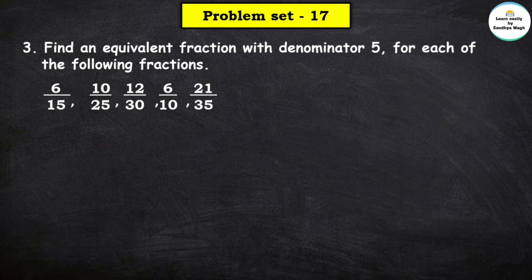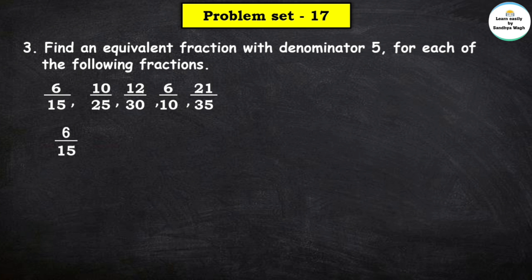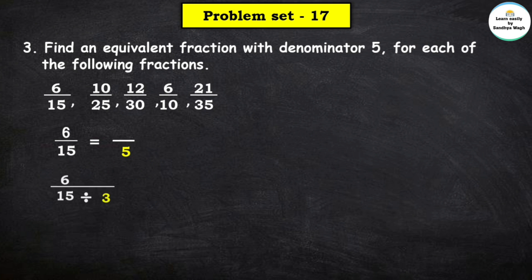Now next question, question number 3: Find an equivalent fraction with denominator 5 for each of the following fractions. Here the required denominator is 5, which is smaller than the given denominators, so we will use division. First fraction is 6 upon 15. 15 divided by which number equals 5? 15 ÷ 3 = 5, so we divide both numerator and denominator by 3. Answer is 2 upon 5, since 3 × 2 = 6 and 3 × 5 = 15.